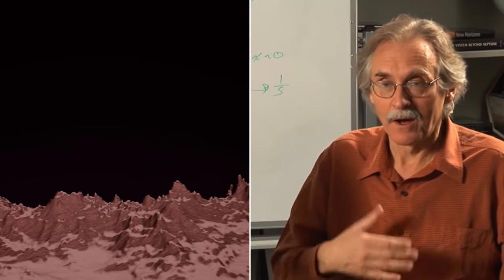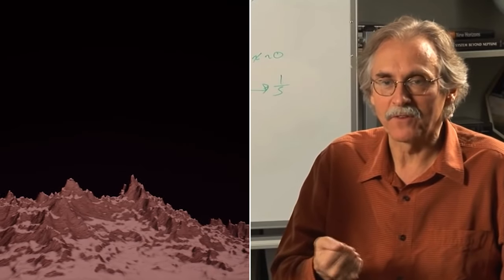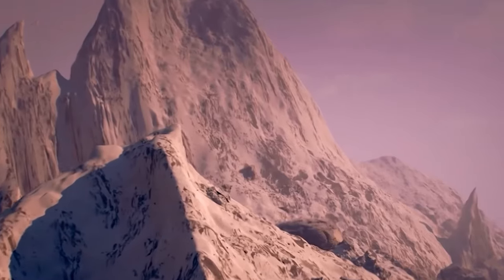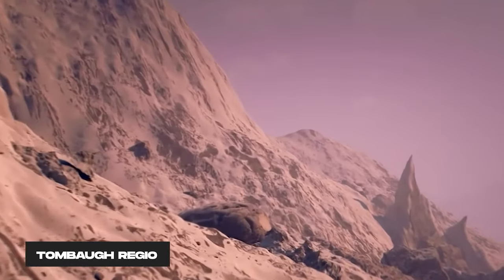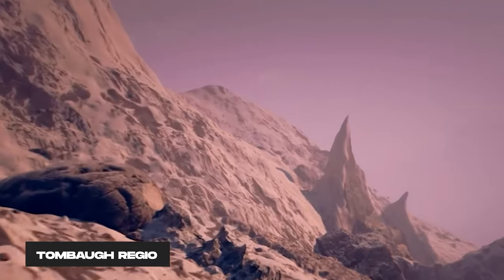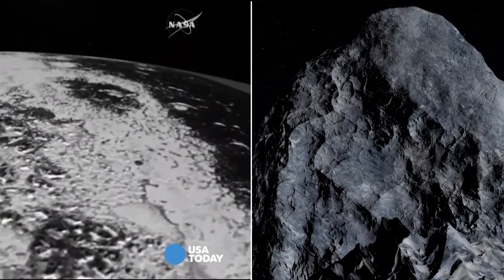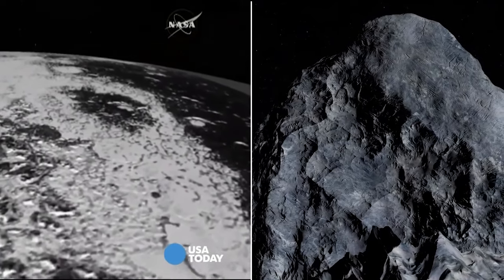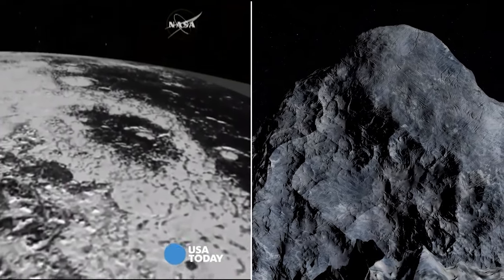Such features indirectly corroborate the notion of Pluto harboring a warm interior. Circling Tombaugh Regio are relatively lofty mountain ranges. Hillary Montes, situated to the west of Sputnik Planitia, reach heights of up to 3.5 kilometers.